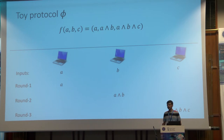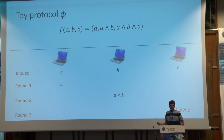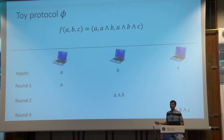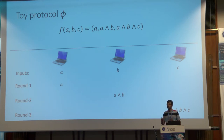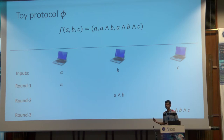This protocol is information-theoretically secure and is secure against passive corruptions of at most two parties. But unfortunately it runs in three rounds, and it's not clear how to compress the round complexity into two rounds in the information-theoretic setting. In this work, we will throw in some computational tools and compress the round complexity of this protocol.